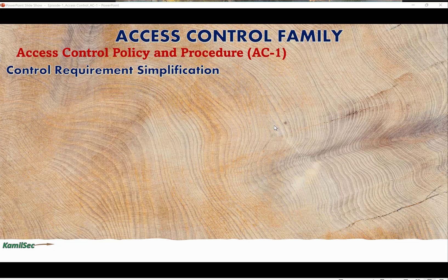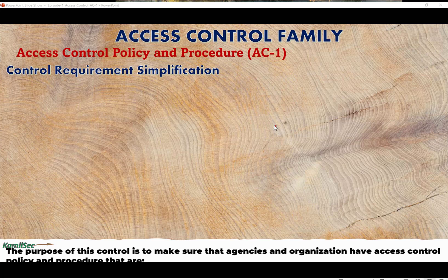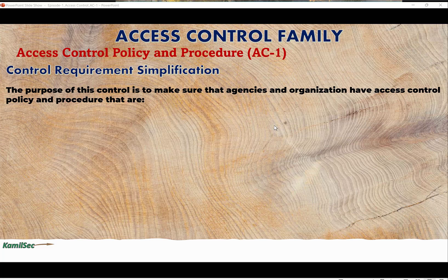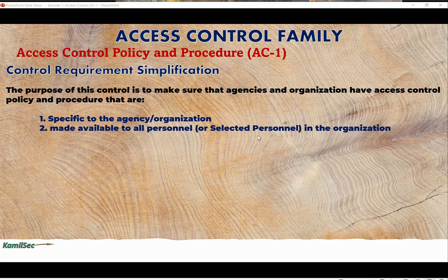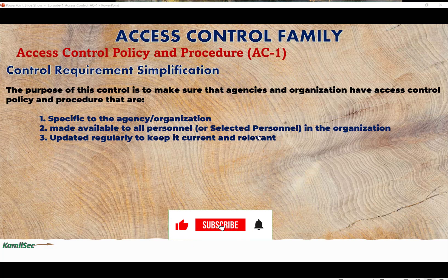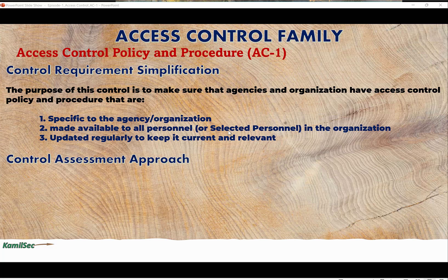Now let's look at the control requirement simplification. Everything in NIST SP 800-53 Revision 5 is the high-level requirement, so let's simplify it. The purpose of this control is to make sure that agencies and organizations have an access control policy and procedure that is: (1) specific to the agency and organization, (2) made available to all or selected personnel, and (3) updated regularly to keep it current and relevant.